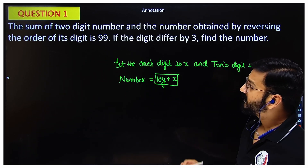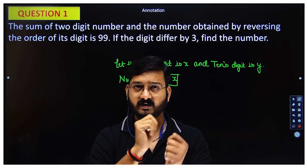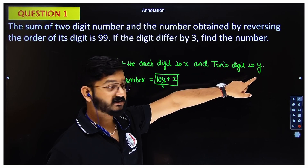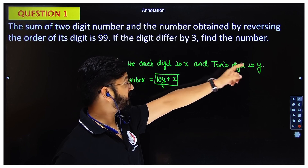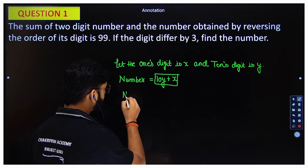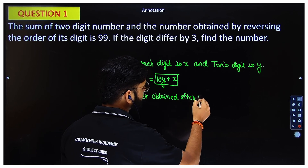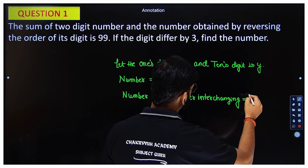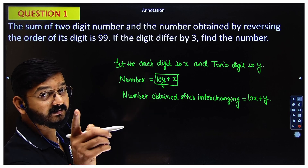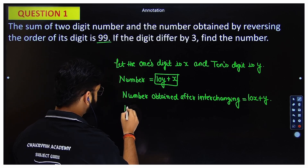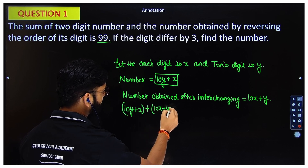The sum of the two-digit number and the number obtained by reversing the order — reversing means x becomes the ten's digit and y becomes the one's digit. So the number obtained after interchanging the digits will be 10x plus y. Adding both: 10y plus x plus 10x plus y equals 99, which gives us 11y plus 11x equals 99.